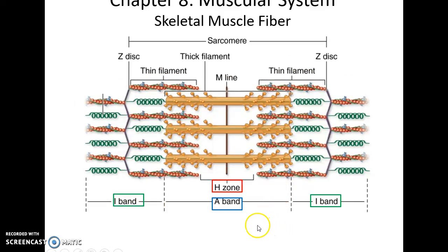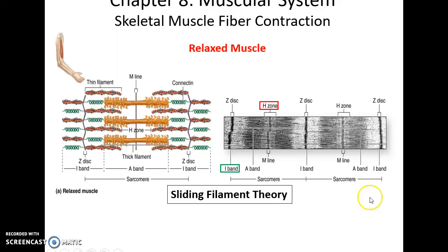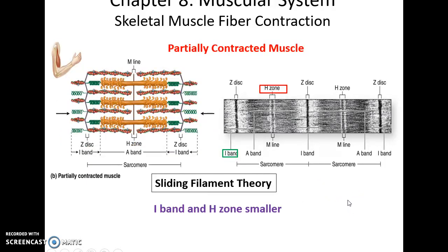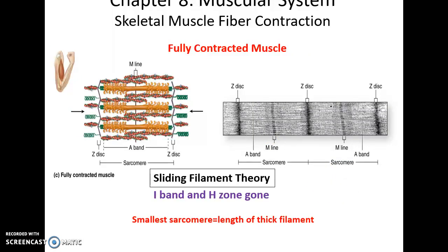Areas in the sarcomere have special names. The A-band is where the thick filament is — the length of the thick filament. The H-zone is where you only have thick filament. The I-bands are where you only have thin filament. When a muscle is fully relaxed, the sarcomere is as long as it can get, with a distinct I-band and H-zone. As you contract, the thin filaments get pulled toward the M-line, the sarcomeres shorten, and the I-bands and H-zones get smaller. In a fully contracted muscle, the sarcomere is as short as the A-band, with no I-bands and no H-zones — all filaments overlapping.